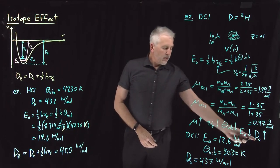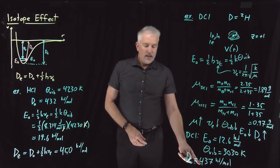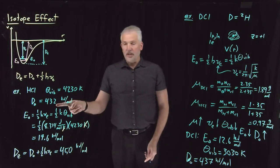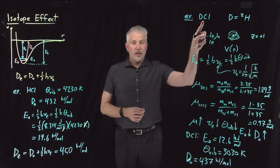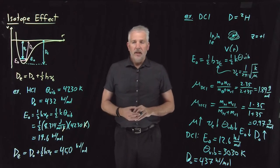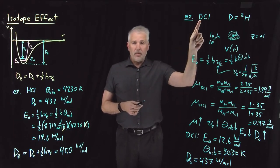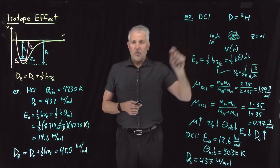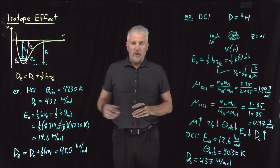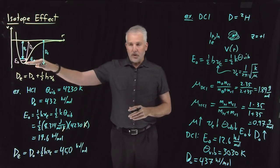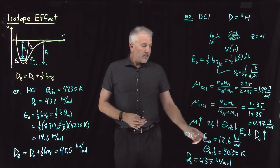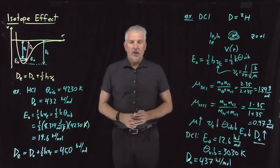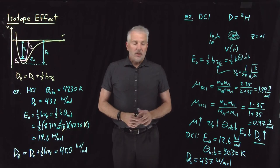Just as we determined qualitatively, the dissociation energy for DCl is a larger number than for HCl — about 5 kilojoules per mole more difficult to dissociate a DCl bond than an HCl bond. Not because the potential energy is any different, not because deuterium attracts chlorine more strongly, but purely because of this quantum mechanical effect: the zero point energy is lower because DCl is a more classical molecule. That fact — that bond dissociation energy is larger for a heavier isotope — has important consequences on many other properties of molecules as well, which we'll consider next.